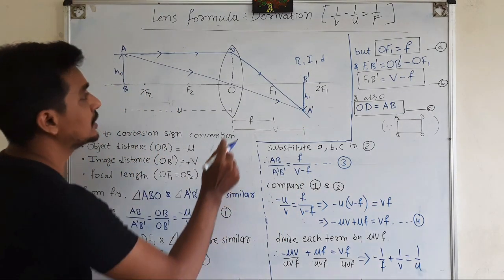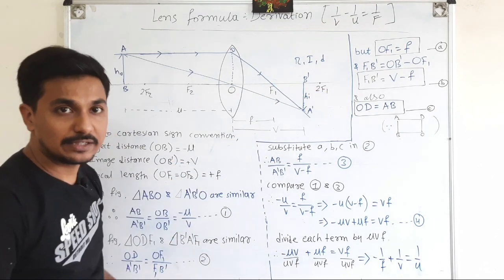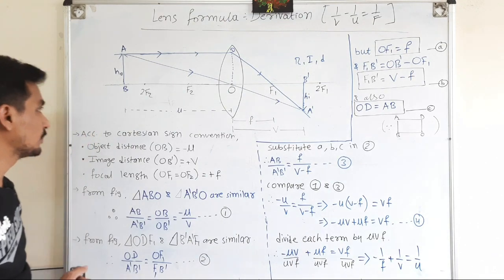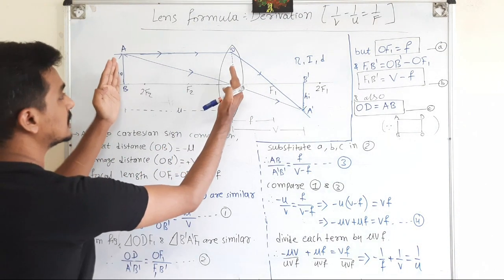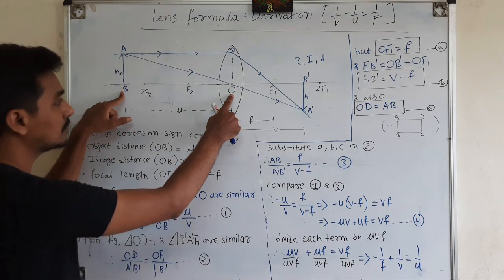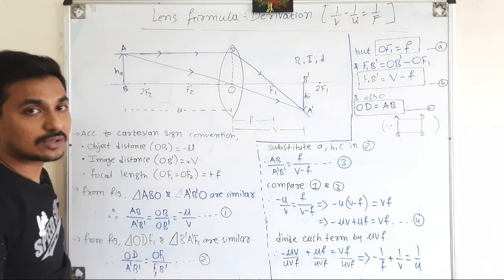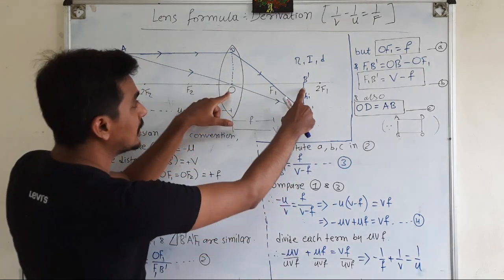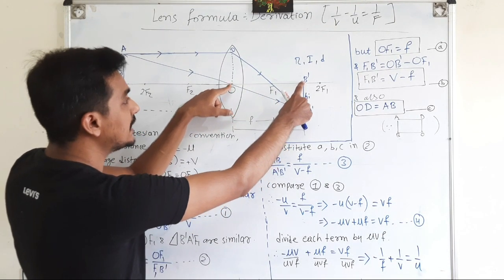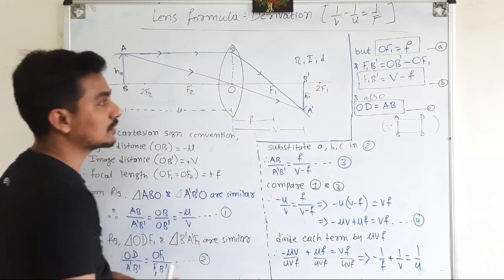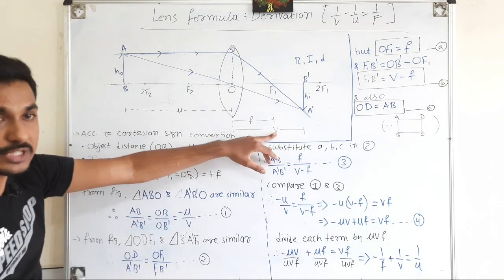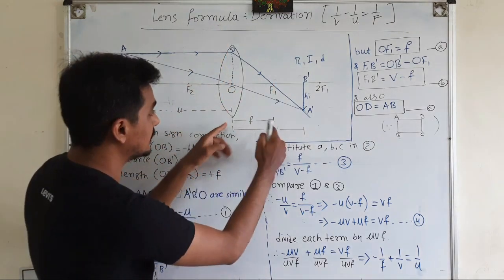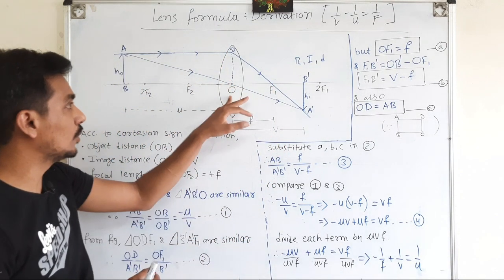The image is obtained between the focus and the center of curvature, or between F1 and 2F1, and its height is HI. The distance from the optical center to position B is called the object distance, which is U. The distance between the image and the optical center, OB', is called the image distance, which is V. The convex lens has a positive focal length — this is the focal length, small f, which is OF1.